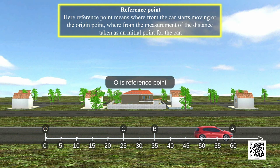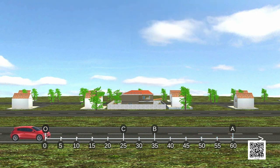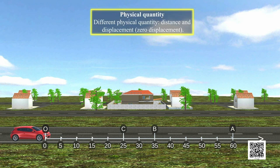Let us see physical quantity in straight line motion. Physical Quantity: Different Physical Quantities include Distance and Displacement, and Zero Displacement.